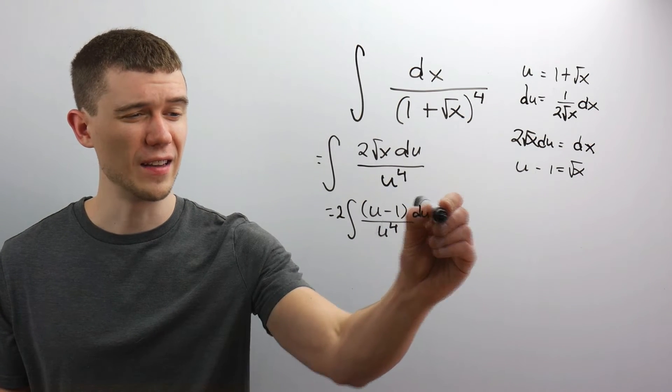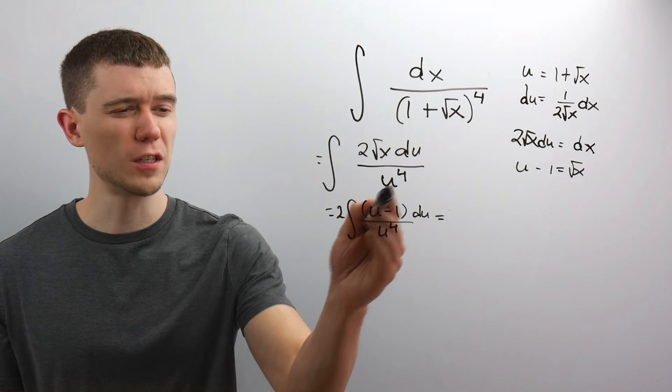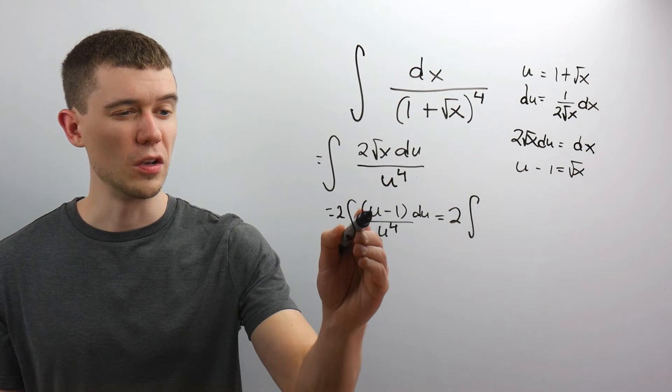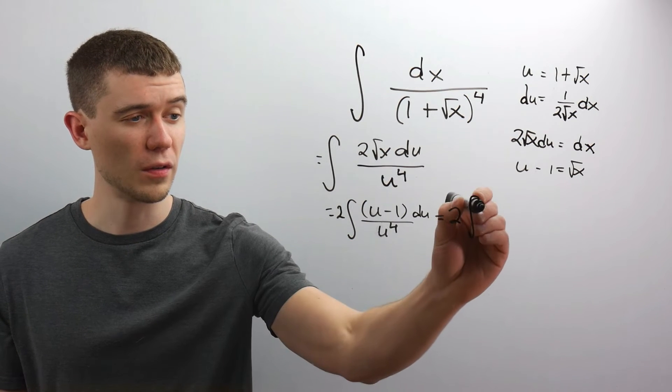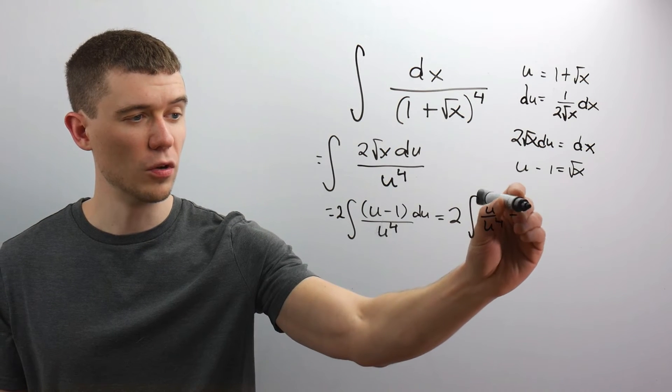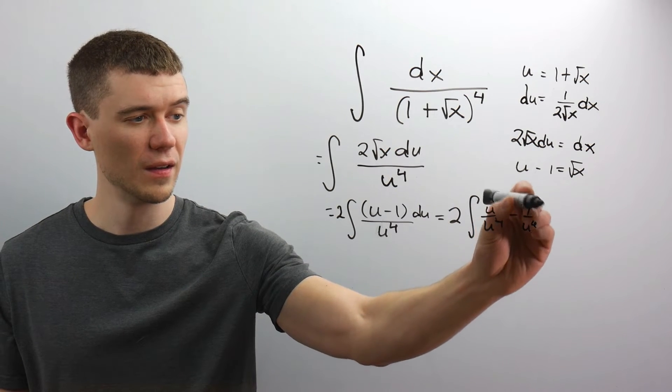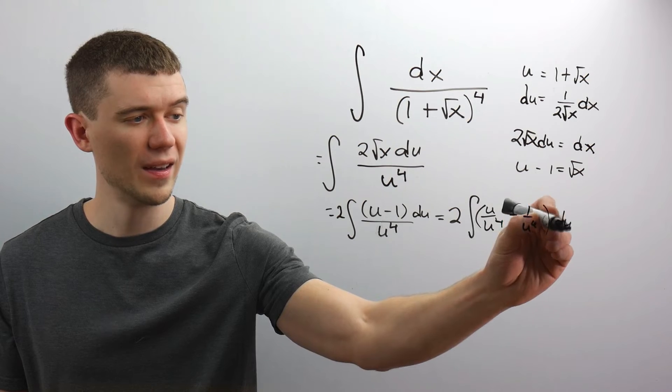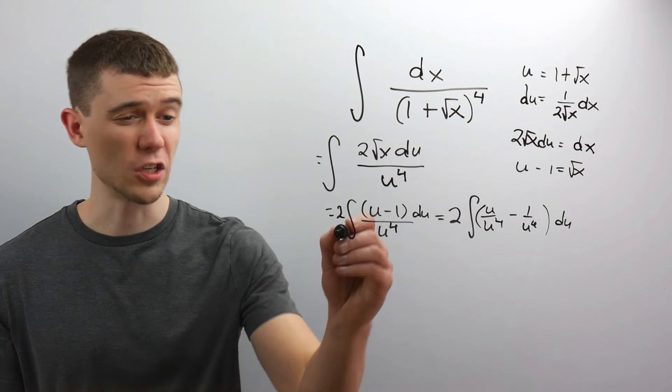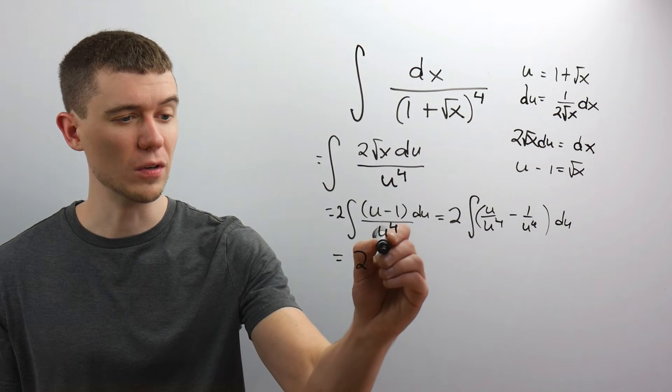In fact, I think the best way to do it would be to split up this fraction. I would just rewrite this as 2 u over u to the 4th, and then minus 1 over u to the 4th. This is still times du. And if you like, you could rewrite this without any fractions, just using properties of exponents here.